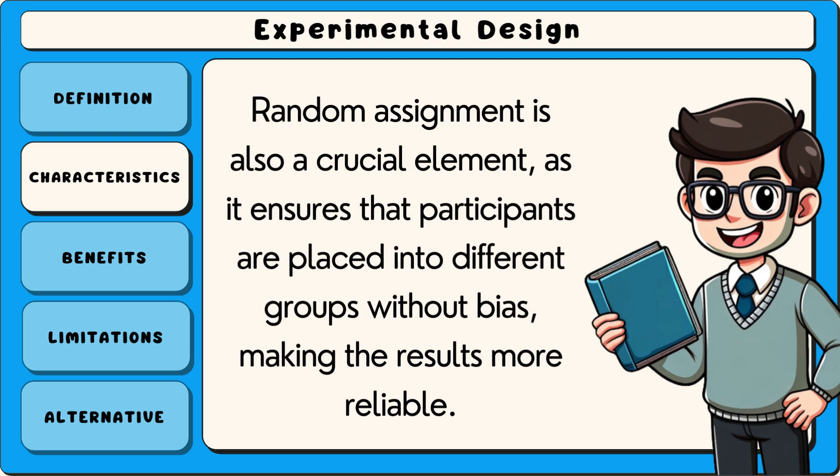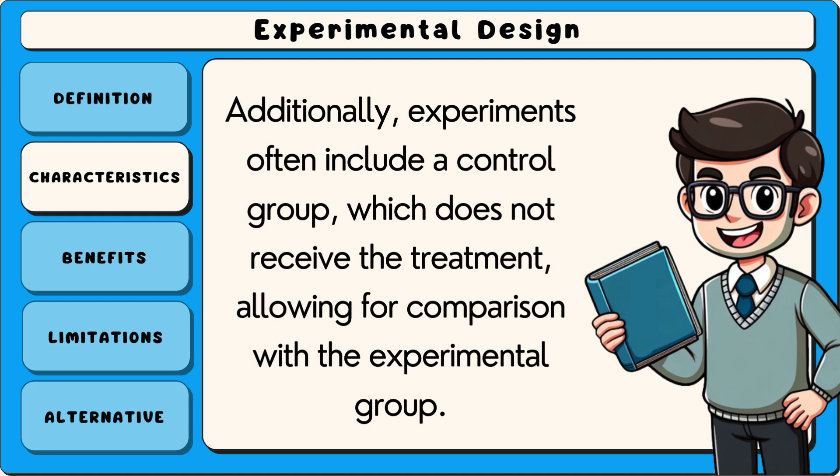Random assignment is also a crucial element, as it ensures that participants are placed into different groups without bias, making the results more reliable. Additionally, experiments often include a control group which does not receive the treatment, allowing for comparison with the experimental group.